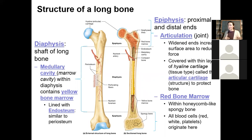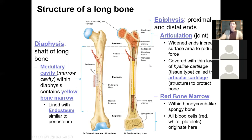Early on in development — in utero, when you are about three months post-fertilization — the medullary cavity is actually filled with red bone marrow, but that disappears over the course of your life as other parts of your bones take over the bone-making process. The medullary cavity is filled with yellow bone marrow and is also lined with endosteum. 'Endo' means all the way on the inside, so the endosteum is essentially the equivalent of the periosteum, only on the inside of the bone.